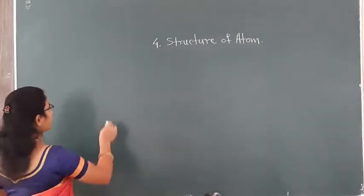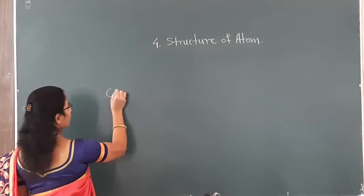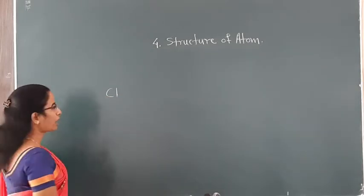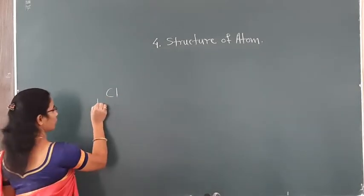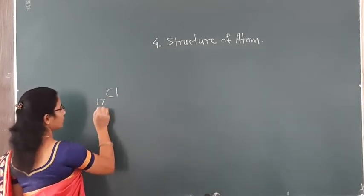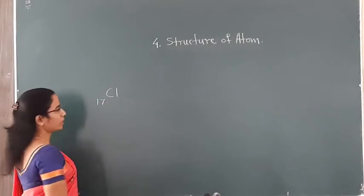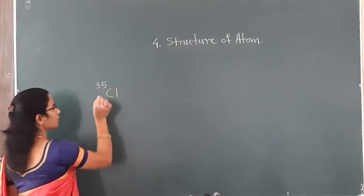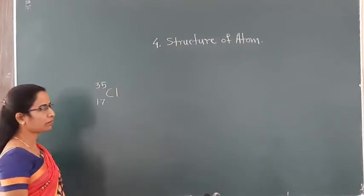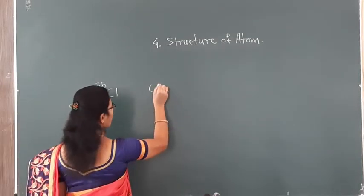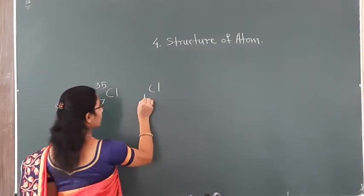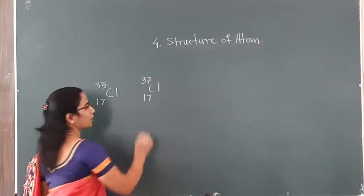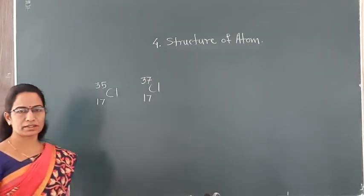Let's see the example of chlorine. The chlorine atom has two isotopes. Its atomic number is 17 and the mass number is 35. One more isotope of chlorine has a mass number of 37.